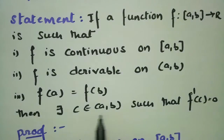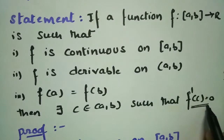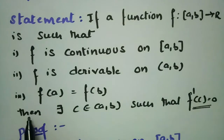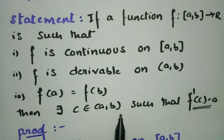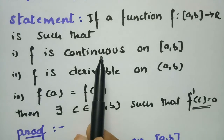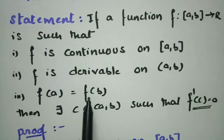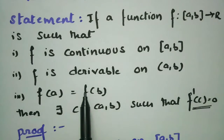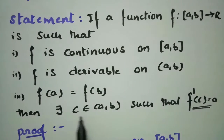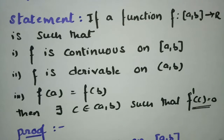So in between a and b there exists a point c such that f'(c) = 0. Given that f is continuous on closed [a,b], f is derivable on open (a,b), and f(a) = f(b), using these three statements we have to prove that there exists a point c belonging to open (a,b) such that f'(c) = 0.